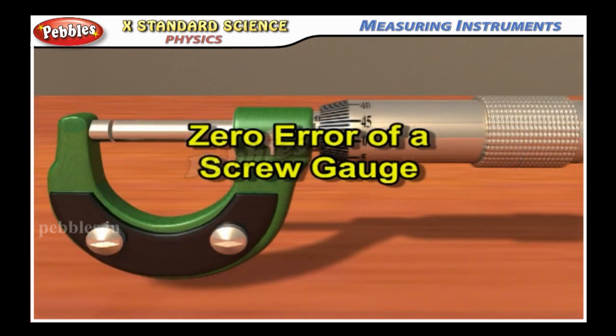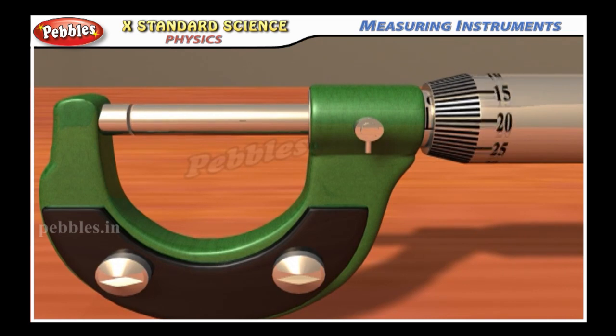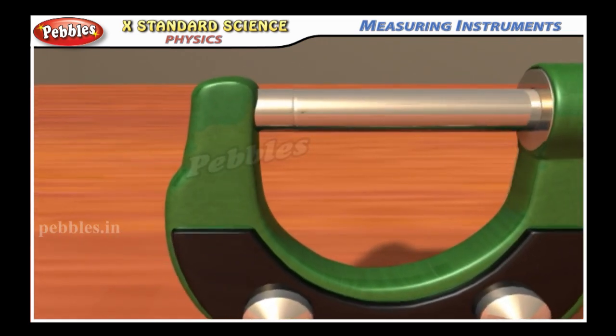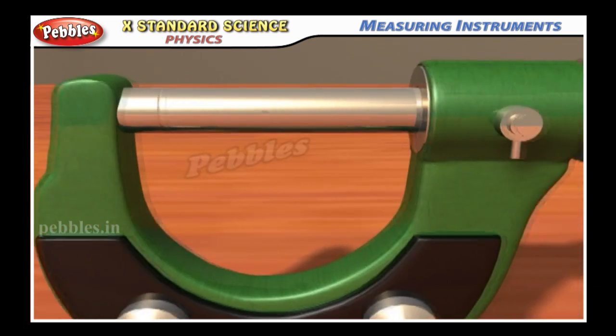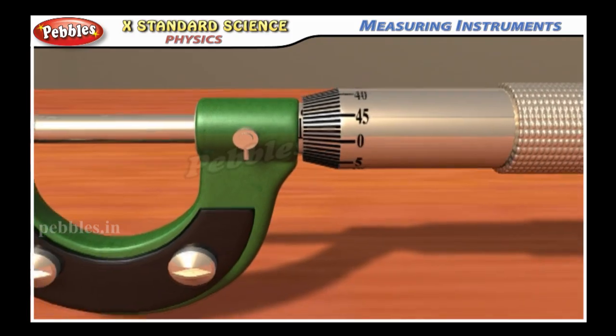Zero error of a screw gauge: the plane surface of the screw and the opposite plane stud on the frame are brought into contact. If the zero of the head scale coincides with the pit scale axis, then there is no zero error.